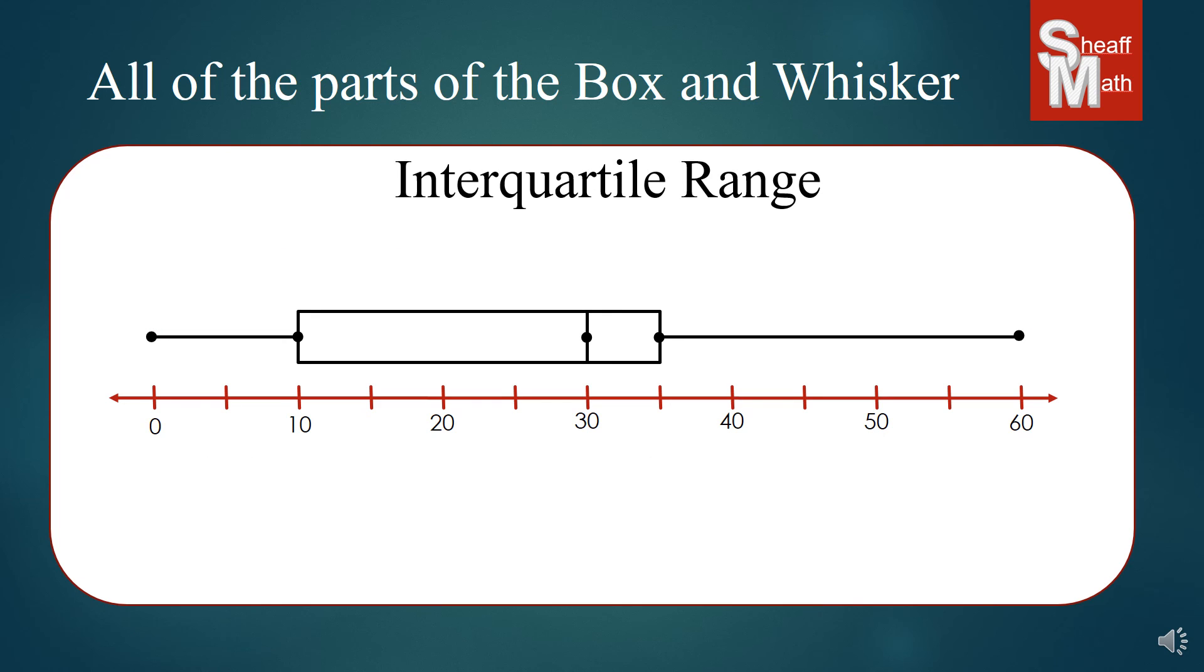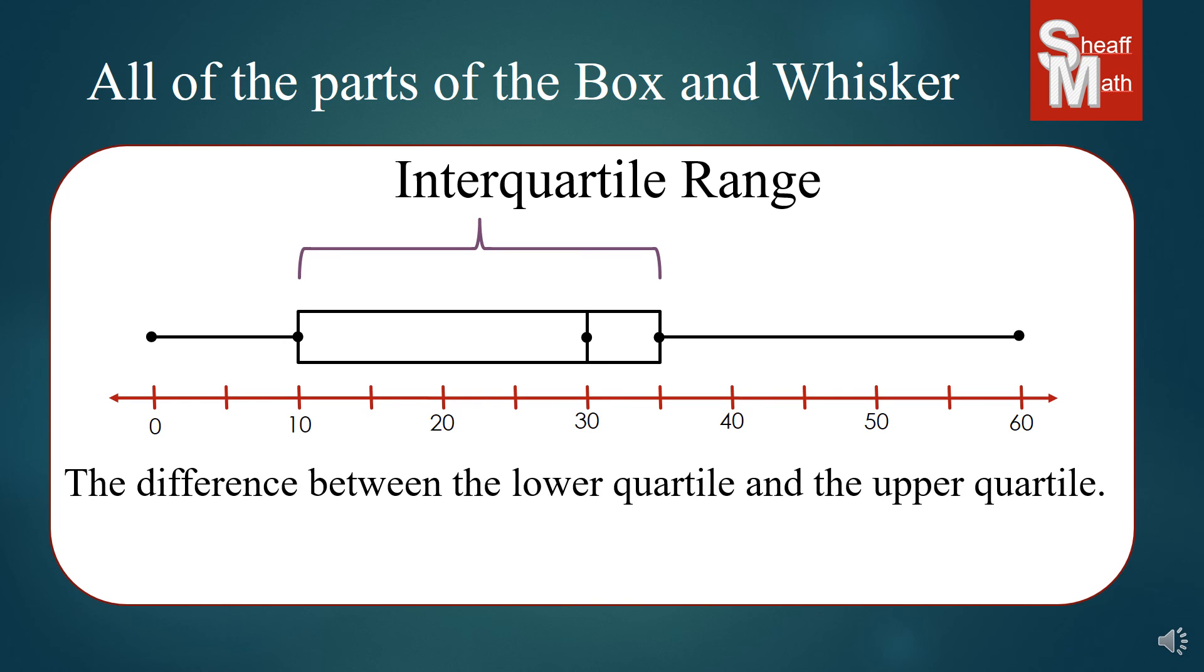Now we have the interquartile range. This is the difference between the upper and lower quartile. It wants to get a different perspective, so it is going to subtract the lower quartile from the upper quartile. So 35 minus 10. Our interquartile range for this box and whisker is 25.